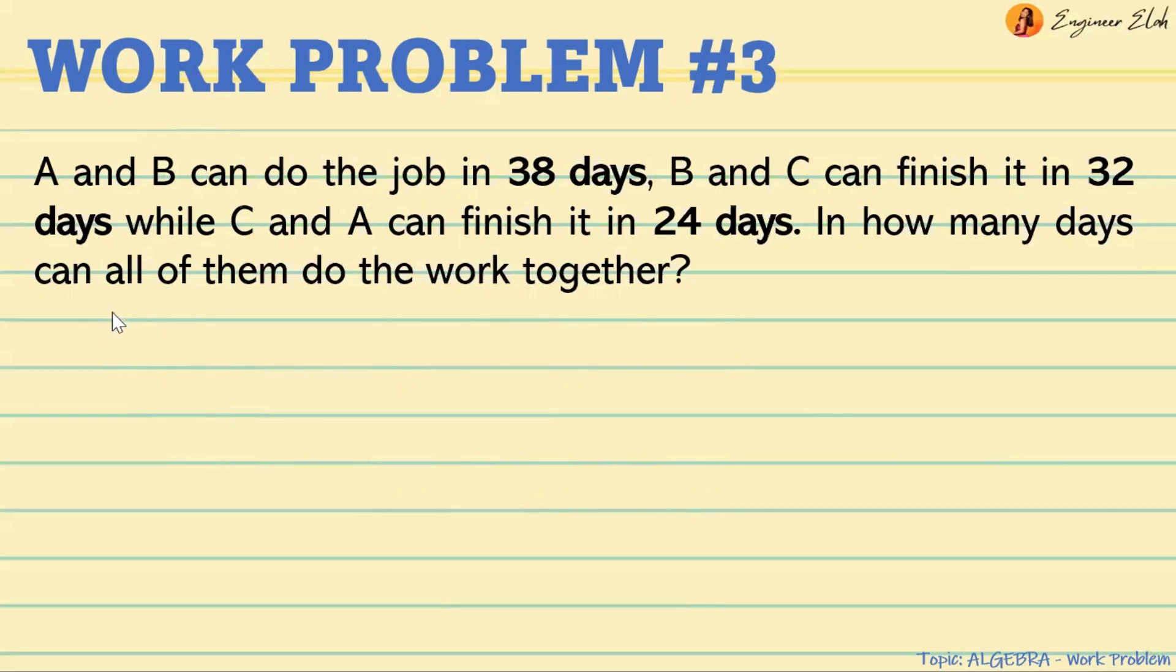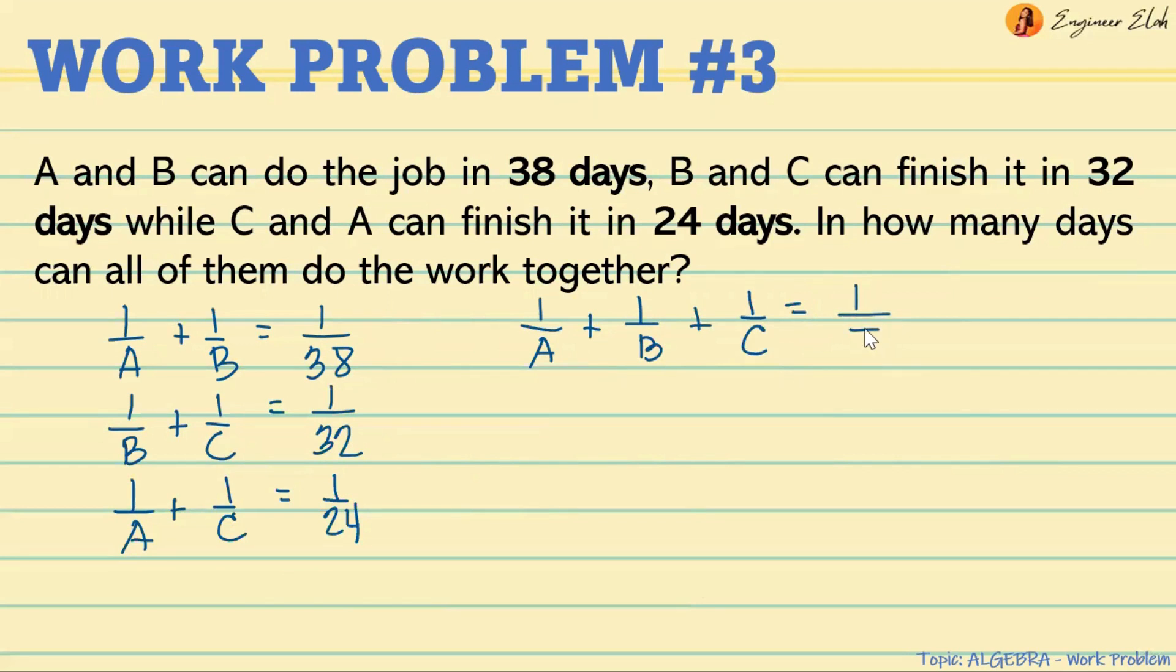So our working equation is: A and B can do the job in 38 days, so that will be 1 over A plus 1 over B equals 1 over 38. B and C: 1 over B plus 1 over C equals 1 over 32. And C and A can finish it in 24 days: 1 over A plus 1 over C equals 1 over 24. We're looking for the days for them to do the work together. So our working equation will be 1 over A plus 1 over B plus 1 over C equals 1 over T, the total time.